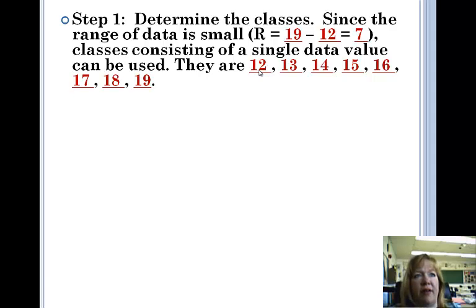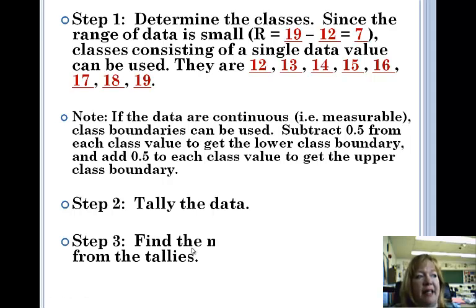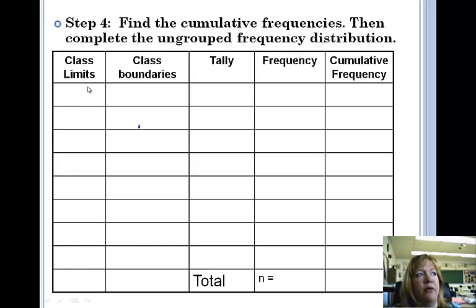And here's the classes. Since there's only one data value in each class, it's 12, 13, 14, 15, 16, 17, 18, 19, because those are all the possibilities. Note, if the data are continuous, class boundaries can be used. You subtract 0.5 from each class value to get the lower class boundary and so on, which we've done a couple of times. Tally it up and find the numerical frequencies. So here we go. Here's our class limits, all those are going to go up by one. 12, 13, 14, 15, and so on, 17, 18, and 19. Those are our class limits.